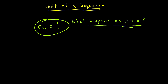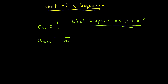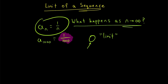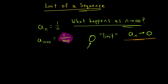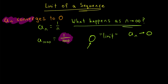For the sequence a_n where the nth term is given by 1 over n, we can plug in some large values for n. For example, the 1,000th value of the sequence is 1 over 1,000. If we plug in more large values, we'll see that the values get very, very close to 0. In fact, 0 is the limit of this sequence — as n goes to infinity, the values get arbitrarily close to 0. So we say the sequence is convergent, and that the sequence converges to 0.